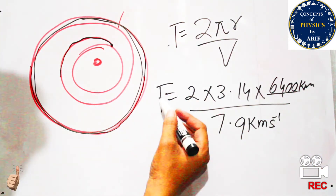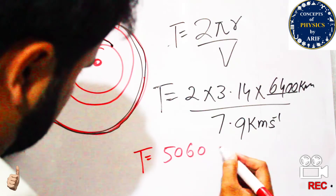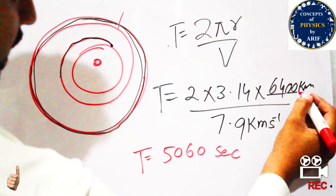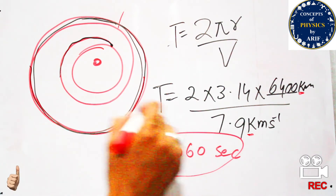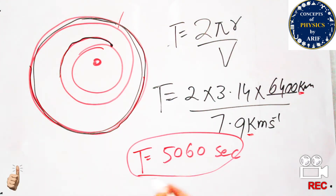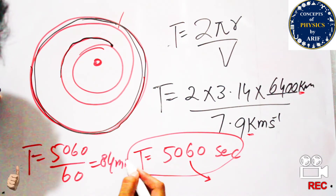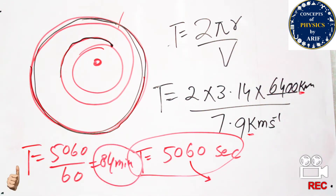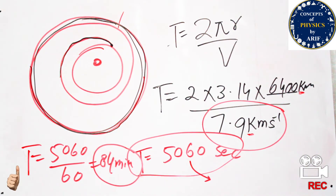Putting in these values and converting kilometers to meters by multiplying by 1000, the time period works out to 5060 seconds. Dividing by 60 to convert to minutes gives approximately 84 minutes. So approximately 84 minutes are required for the body to complete one orbit at critical velocity using the rocket.